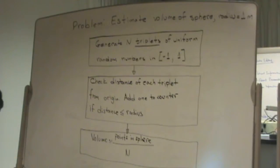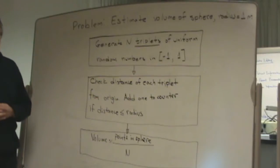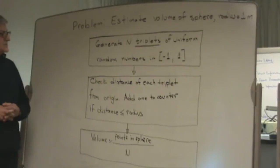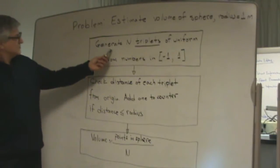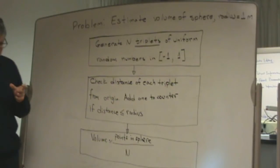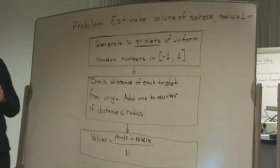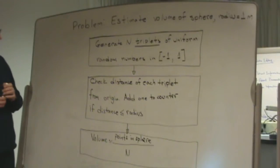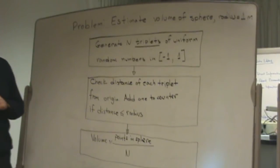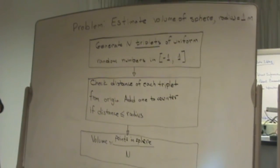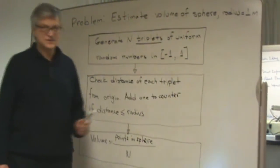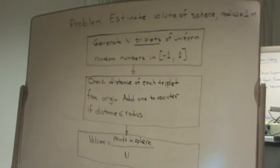We have a sphere with a radius of one meter and we want to estimate its volume. Here is what we'll do: we're going to generate triplets of numbers — groups consisting of three random numbers — uniformly distributed from minus one to plus one. That means they have the same chance to be anywhere in this region, from minus one to plus one.